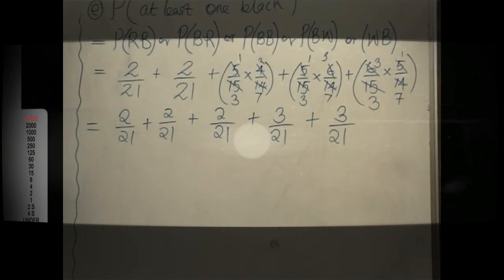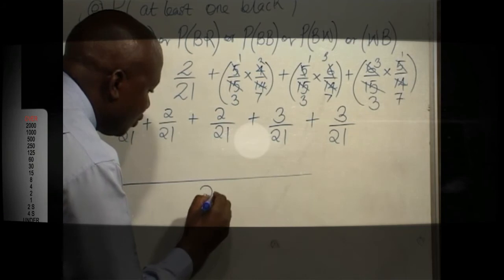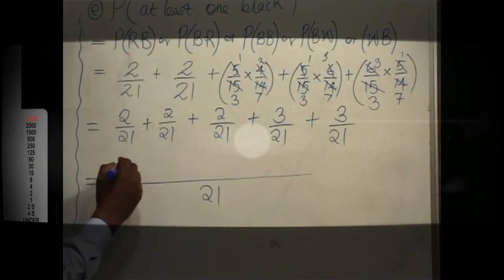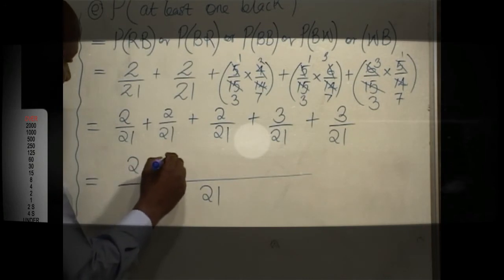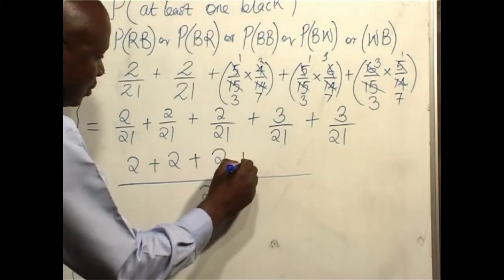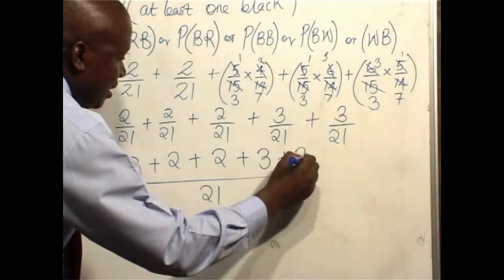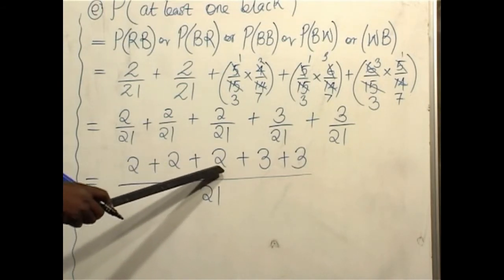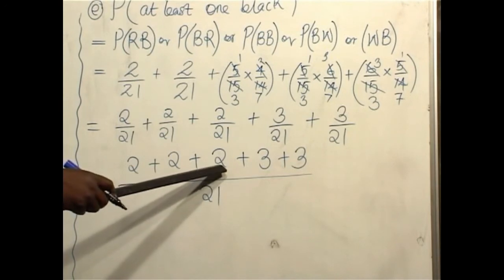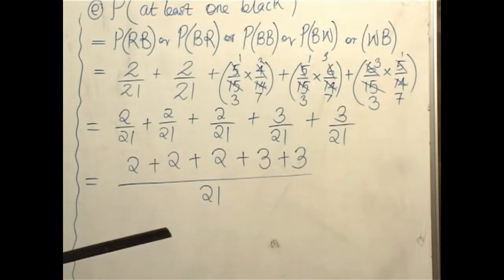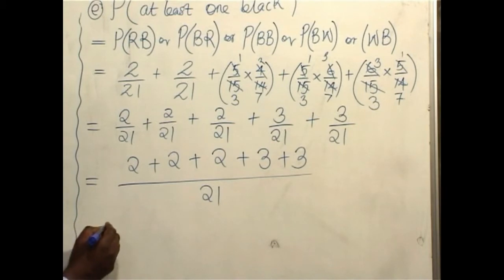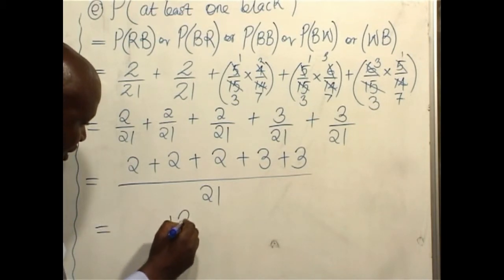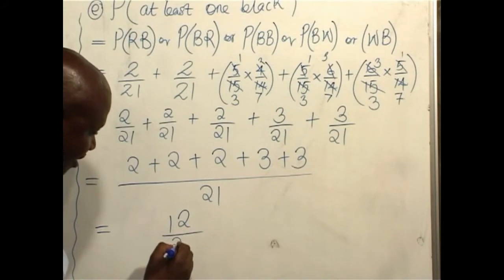3 times 1 is 3, divided by 21 which is 3 times 7. The denominators, like I said, throughout are 21. So our lowest common denominator is 21 and the numerators respectively will be 2 plus 2 plus 2 plus 2 plus 3 plus 3. 2 plus 2 plus 2 will give us 6. 3 plus 3 is also 6. 6 plus 6 is going to give us 12.